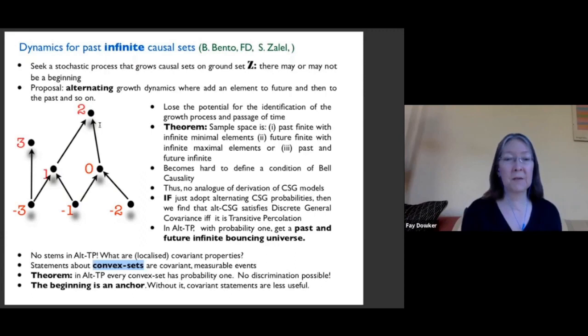And the answer is yes for any finite suborder as a convex set. So will I get this 10 to the 240 element causal set with all these causal relations? The answer is yes, with probability one. In fact, you'll get it infinitely many times with probability one. So in transitor percolation, if you just limit yourself to convex set questions or statements about the structure of the causal set that you grow, there's no discrimination possible at all. All the causal sets look exactly the same as far as the convex set questions are concerned, because the answer is always yes.